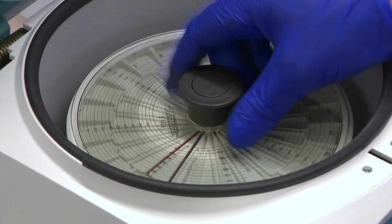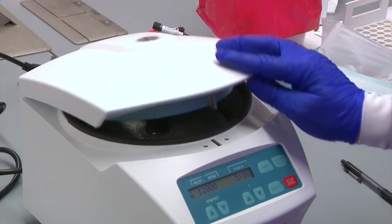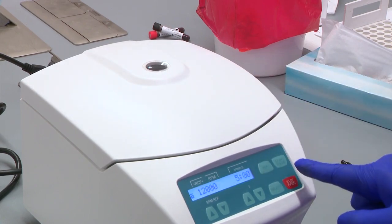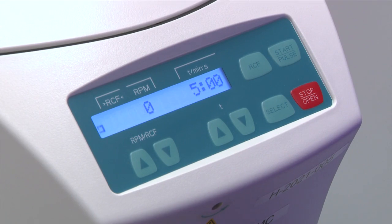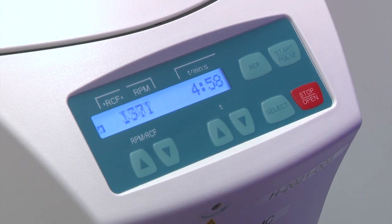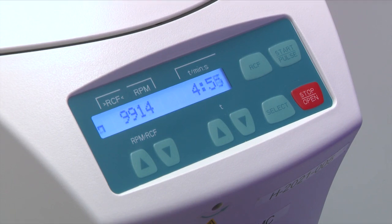Secure the centrifuge lid by pressing down until it clicks in place and close the centrifuge. Centrifuge tubes for five minutes at approximately 12,000 rpm. Do not adjust the centrifuge speed or time as this has been validated for each individual hematocrit centrifuge.